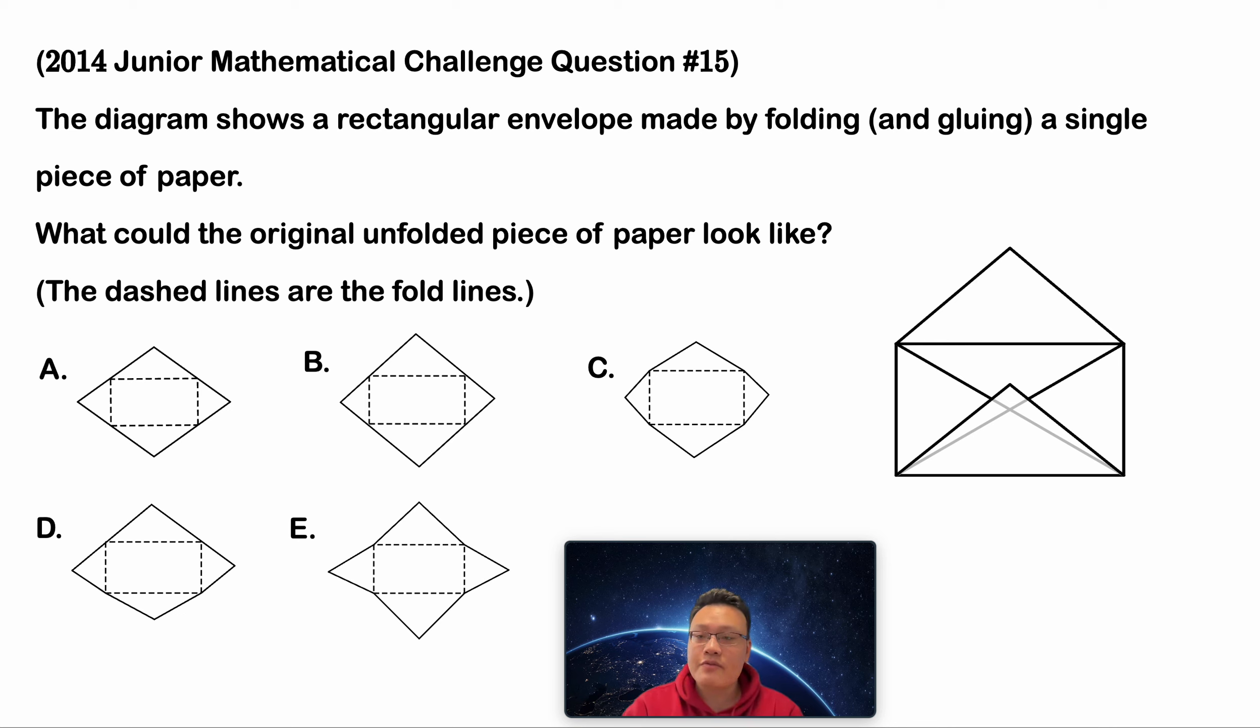2014 GMC question number 15. The diagram shows a rectangular envelope made by folding a single piece of paper. What could the original unfolded piece of paper look like? The dashed lines are the fold lines.